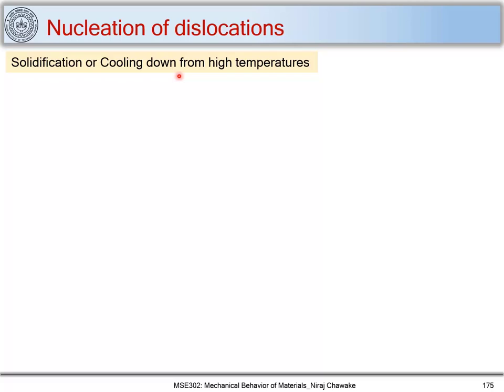When you cool down from high temperatures there will be creation of high local internal stresses, generated because of thermal gradients. If you have a large volume of material which you solidify or cool down from high temperature, each part or portion of this material will cool down at a different cooling rate, and thus creates thermal stresses or thermal gradients which in turn creates internal stresses — this is a reason for formation of dislocations.